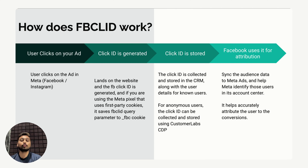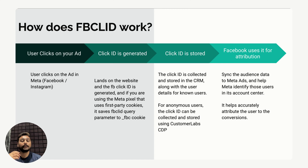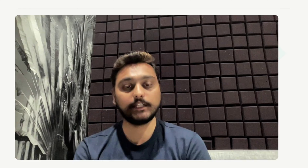To send the click ID back to Facebook, use the Conversions API or any server-side mechanism to send the click ID and other customer parameters to Facebook. Facebook will then use this click ID to identify that user and attribute which campaign or ad they came from. This improves your conversions because attribution is done accurately.